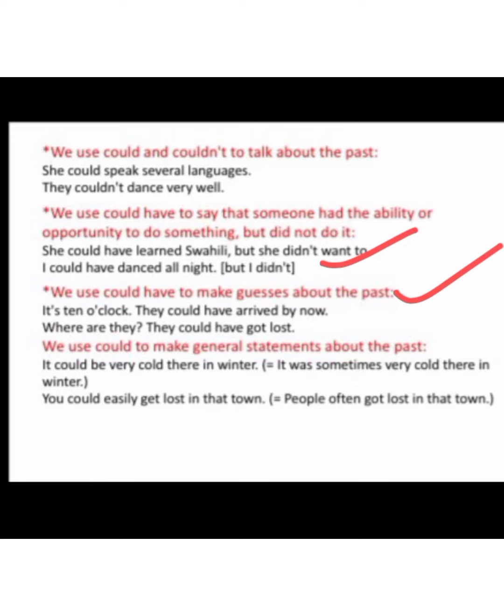We can use 'could have' to make guesses about the past. For example: 'It's 10 o'clock — they could have arrived by now. Where are they? They could have got lost.' We also use could to make general statements about the past: 'It could be very cold there in winter,' 'You could easily get lost in that town.' Generally, we use could for the past.